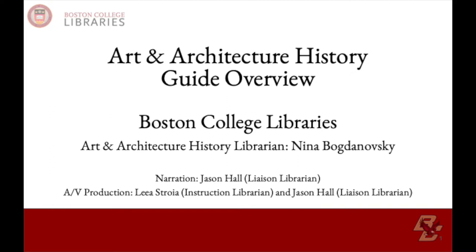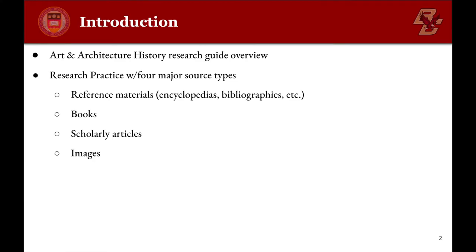Hello and welcome. In this video instruction series, we will be reviewing the Boston College Library's Art and Architecture History Research Guide. We will be covering how best to research four major source types: reference materials such as encyclopedias and bibliographies, books, scholarly articles, and images.